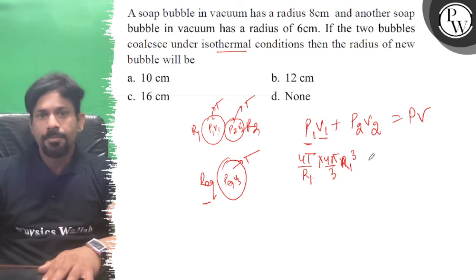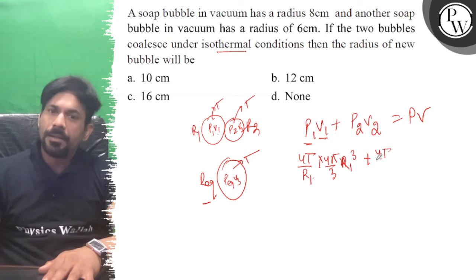Plus 4T by r2 into v2, 4 pi by 3 r2 cube, and that is equal to p into 4T by r equivalent, 4 by 3 pi r equivalent cube.